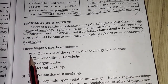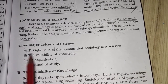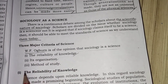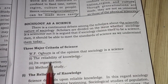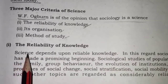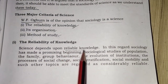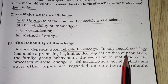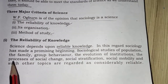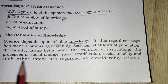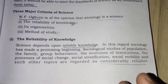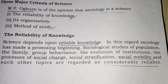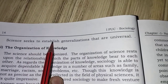WF Ogburn is of the opinion that sociology is a science. He gives three major criteria: the reliability of knowledge, its organization, and method of study. Regarding reliability of knowledge, science depends upon reliable knowledge. Sociological studies of population, the family, group behavior, the evolution of institutions, social change, social stratification, social mobility and such topics are regarded as considerably reliable. Science seeks to establish generalizations that are universal.